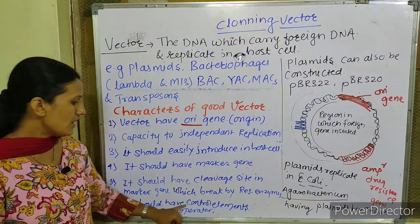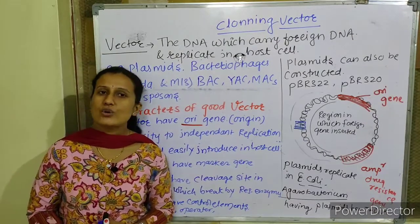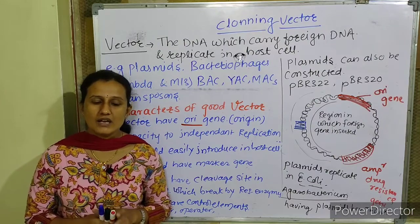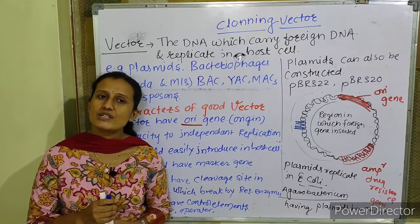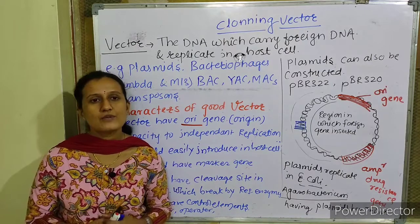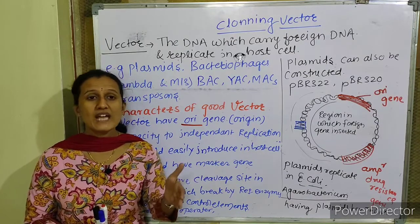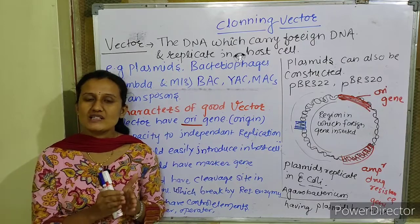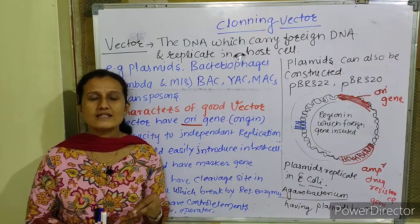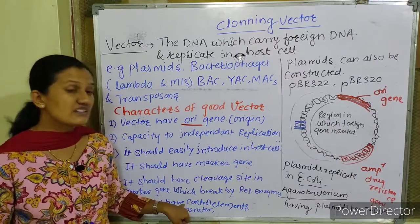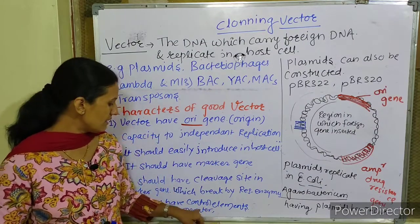Sixth, the vector should have control elements — a promoter, operator, repressor, and regulatory gene. Every vector must be able to control protein synthesis through these elements. The regulatory gene operates on the operator, produces repressor mRNA, and controls enzyme and protein synthesis. The promoter, operator, and repressor — these regulatory elements — must all be present in the vector.